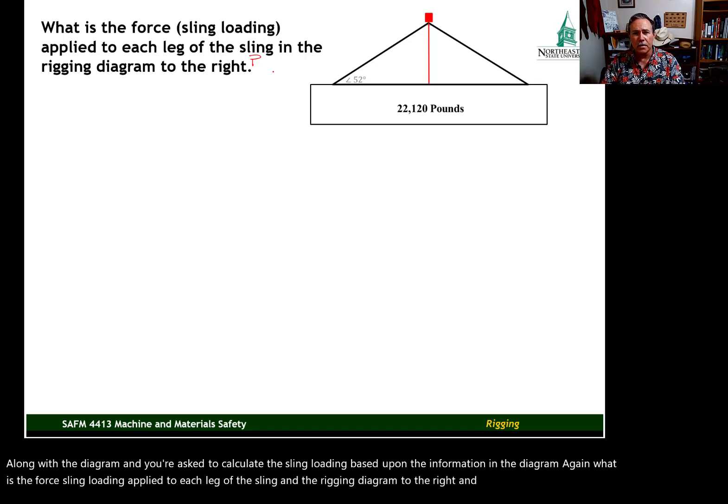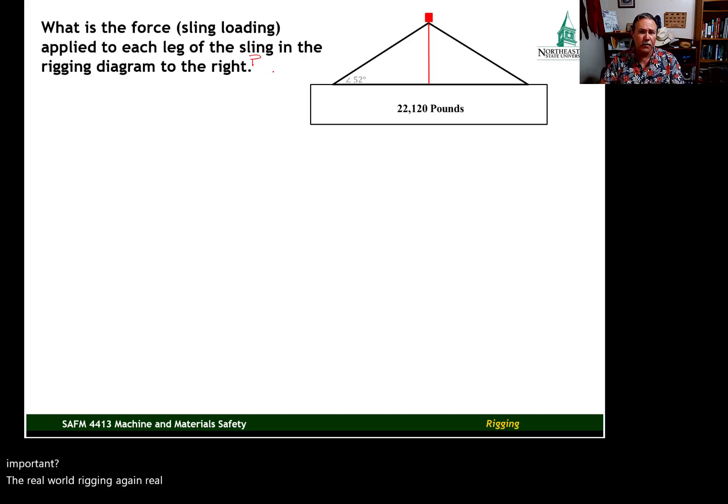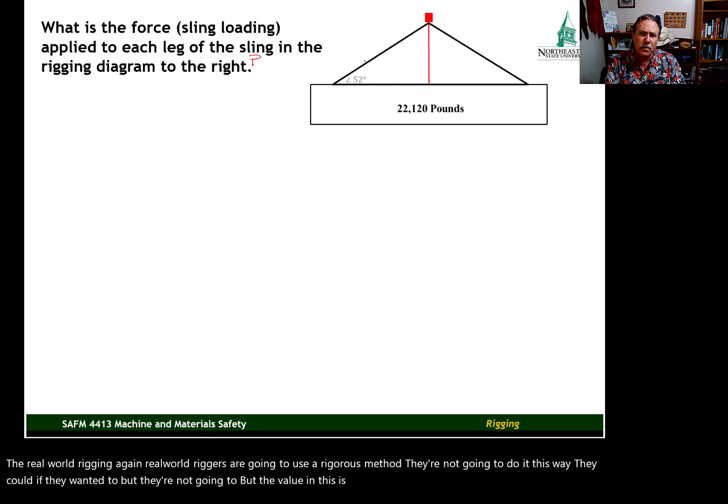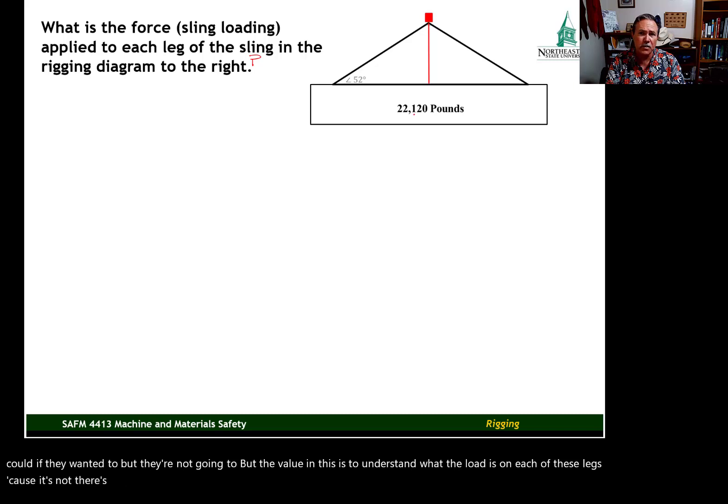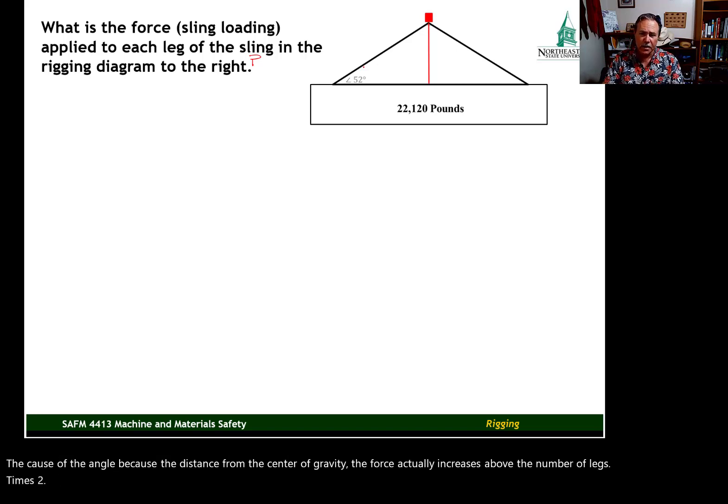And the reason this is important for real-world rigging, real-world riggers are going to use the riggers method. They're not going to do it this way. They could if they wanted to, but they're not going to. But the value in this is to understand what the load is on each of these legs. Because there's two legs, but the loading is not 22,120 pounds divided by two. Because of the angle, because of the distance from the center of gravity, the force actually increases above the number of legs times two.